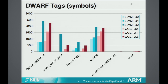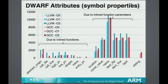The two things on the right were the fact that GCC generated labels and unspecified parameters — LLVM doesn't generate them at all. Looking at the properties of the symbols, the ones to the left are due to inline functions, the ones to the right are the parameters. Most of the increases on the parameters when we optimize are all due to duplicate information, so practically all those ones on the right should be reducible.